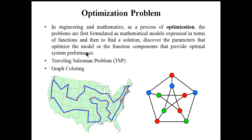In engineering and mathematics, to implement an optimization technique for a real-life problem, we first need to formulate a mathematical model. This model must be expressed in terms of an objective function, and then we discover the parameters that optimize the model — providing the optimal system performance. We need to use some kind of model or function for modeling a particular engineering problem, then find the maximum or minimum value of that function and the corresponding solution.